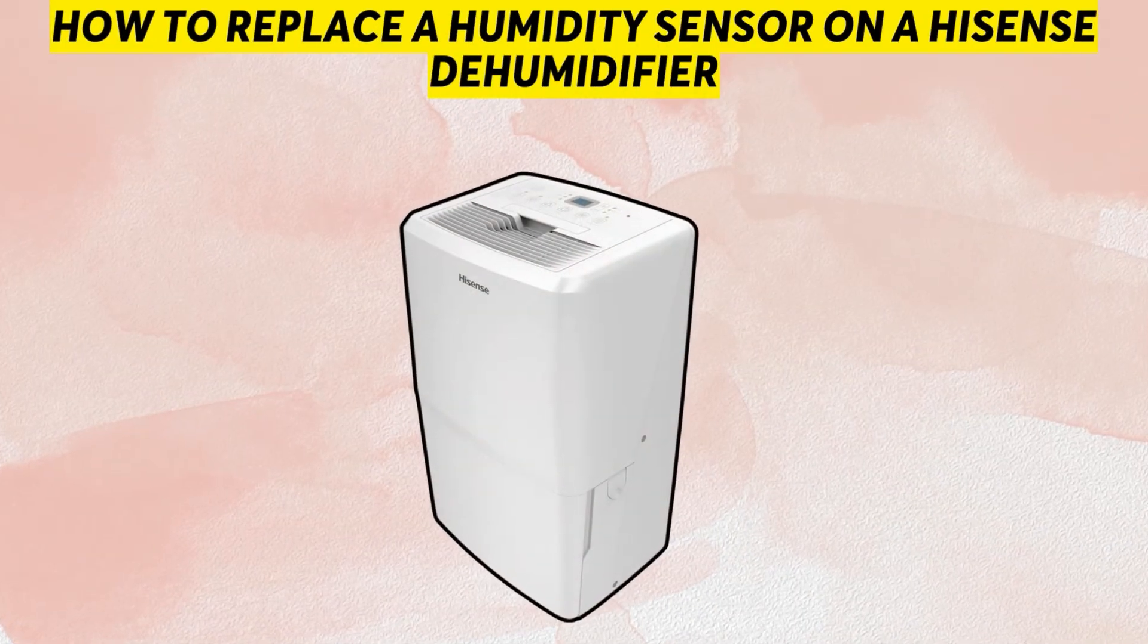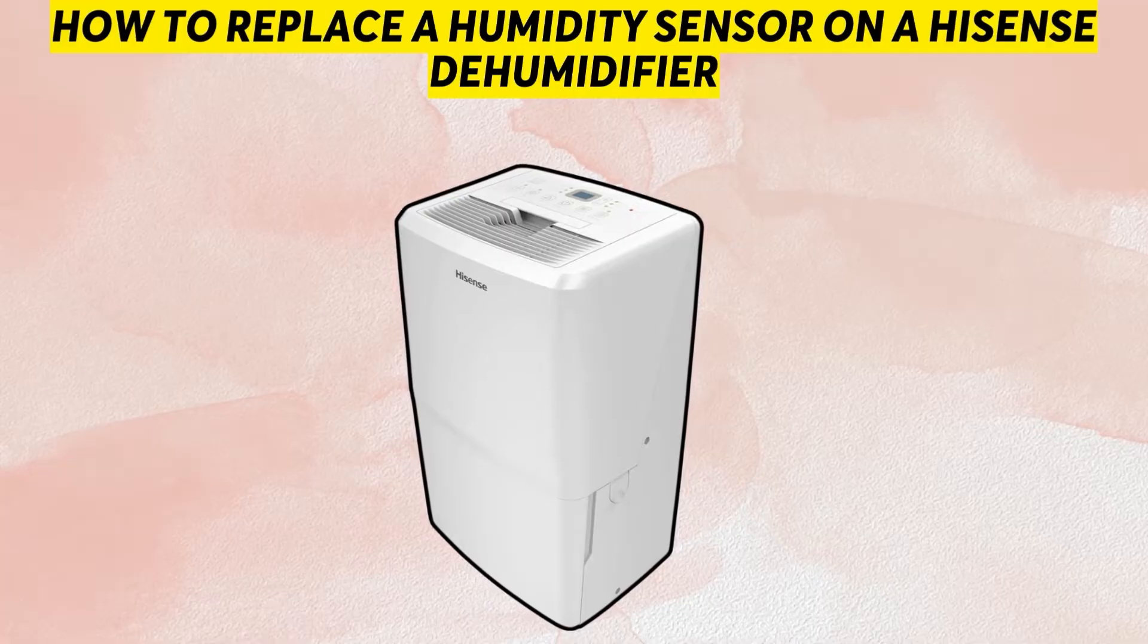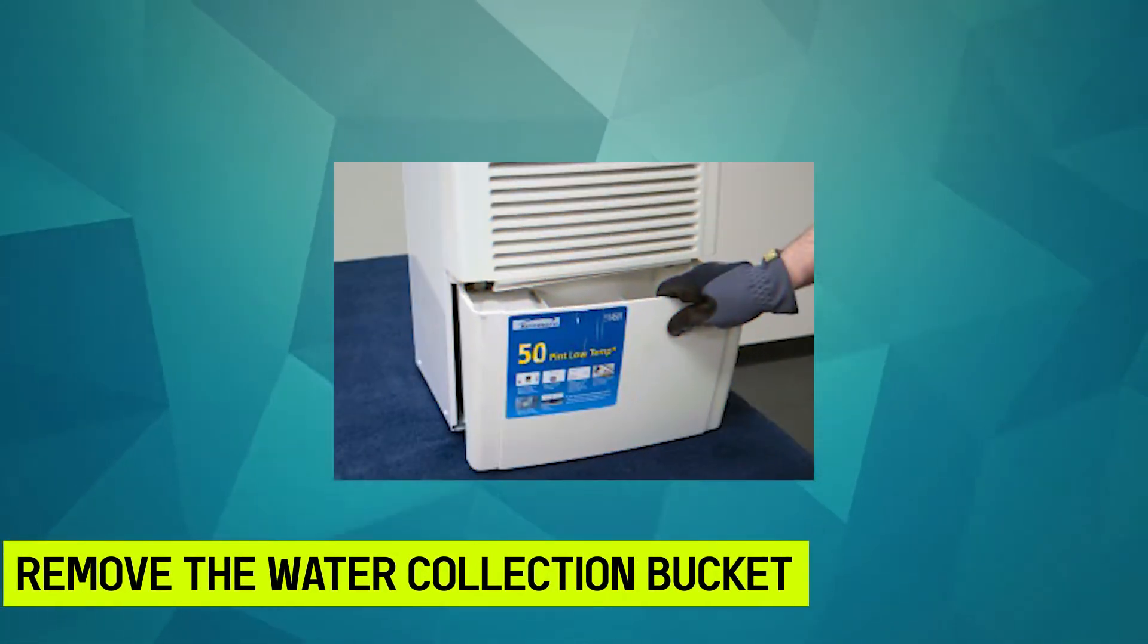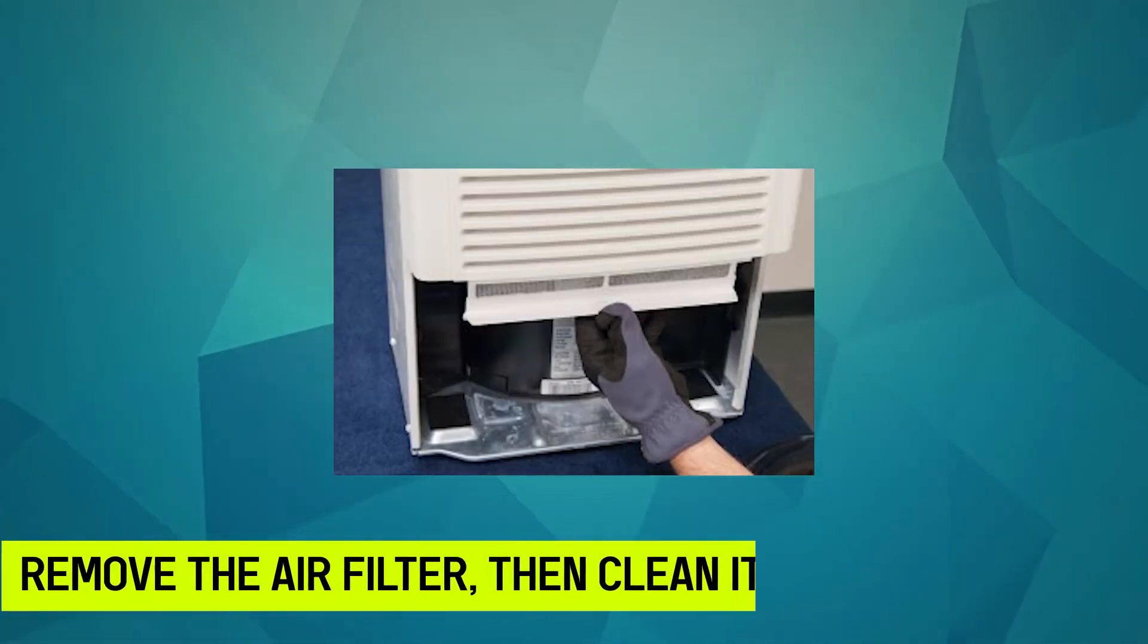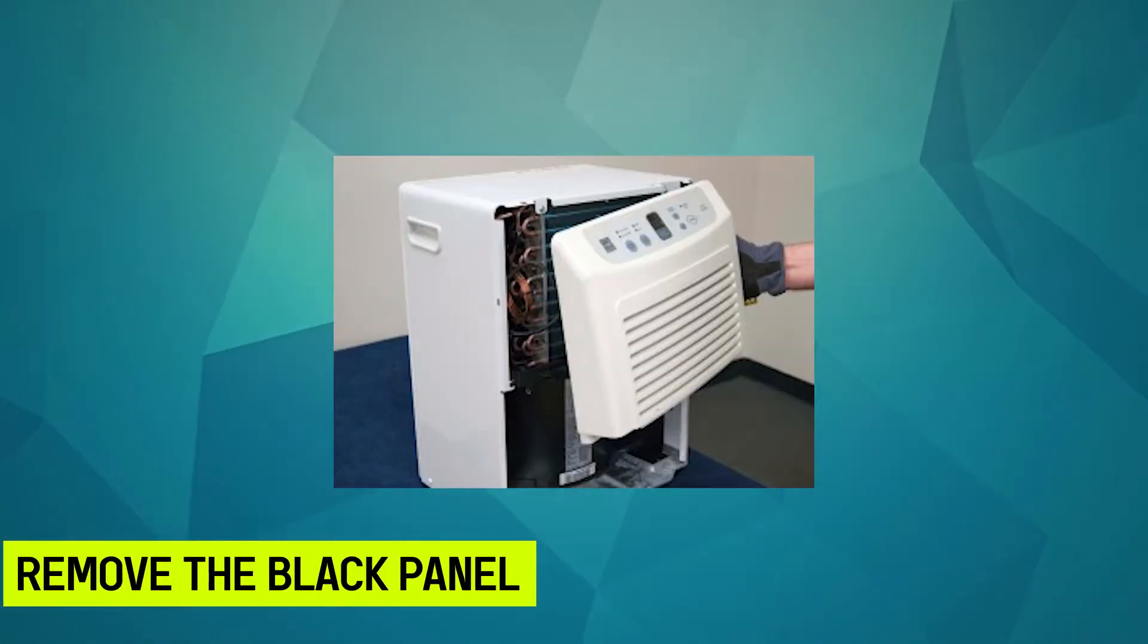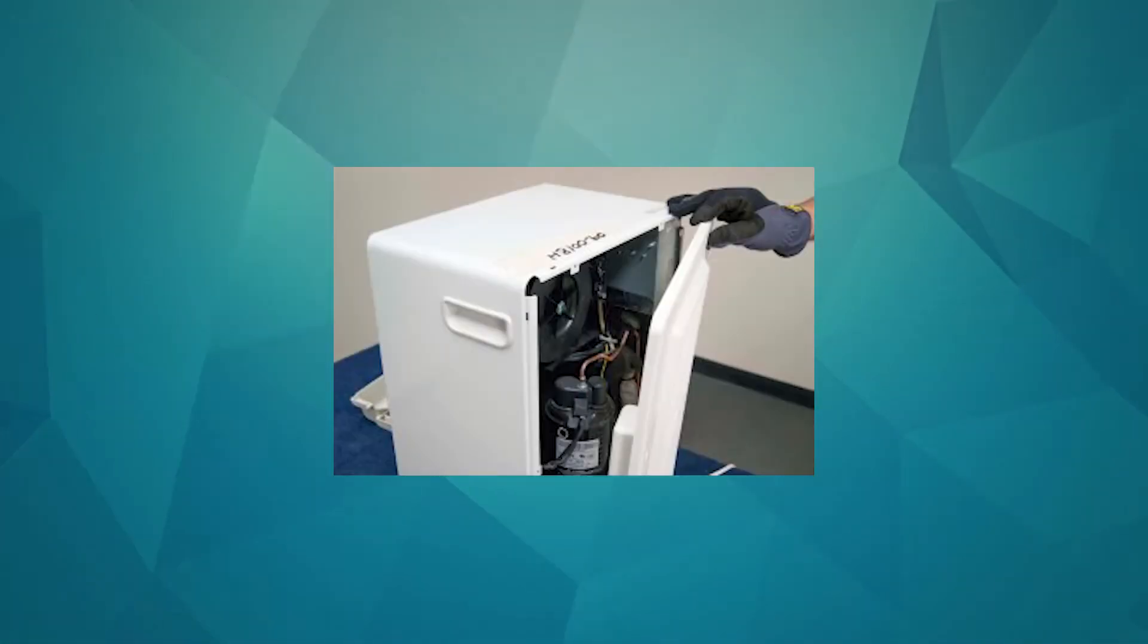How to replace a humidity sensor on a Hisense dehumidifier: Remove the water collection bucket from the dehumidifier. Remove the air filter, then clean it. Unscrew the front grill and remove the black panel. You can unscrew the outer case to reveal the humidity sensor inside.